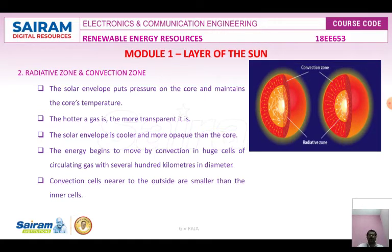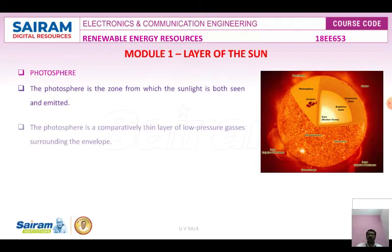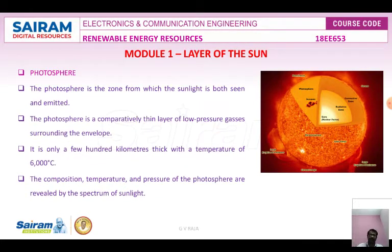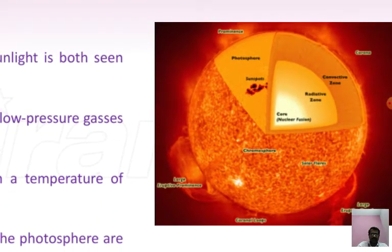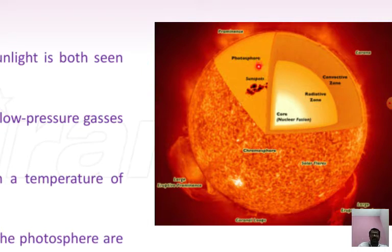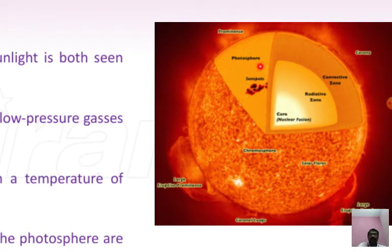The granules, when observed through a telescope, appear as small tiny specks on the sun. The photosphere is the zone from which sunlight is both seen and emitted. It is a comparatively thin layer of lower-pressure gases surrounding the envelope, only a few hundred kilometers thick, with a temperature of about 6000°C. The temperature, composition, and pressure are revealed by the spectrum of sunlight. When analyzing the solar spectrum, a gas was discovered that did not belong to any gas known on Earth — it was named helium.